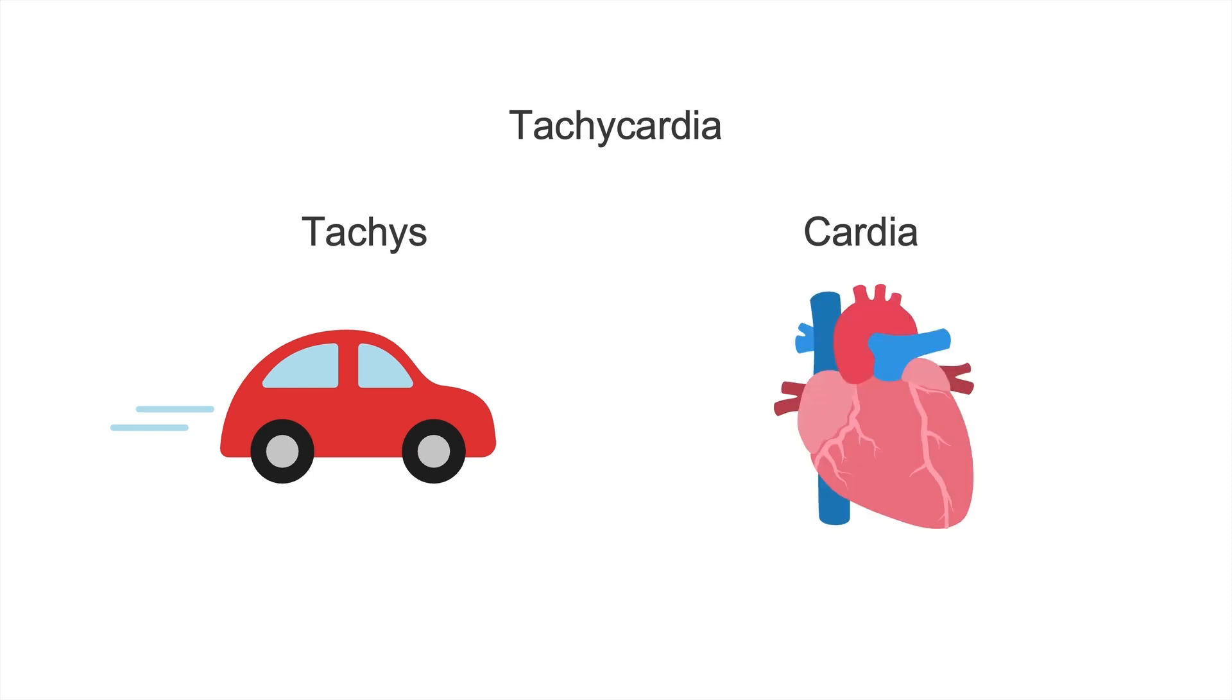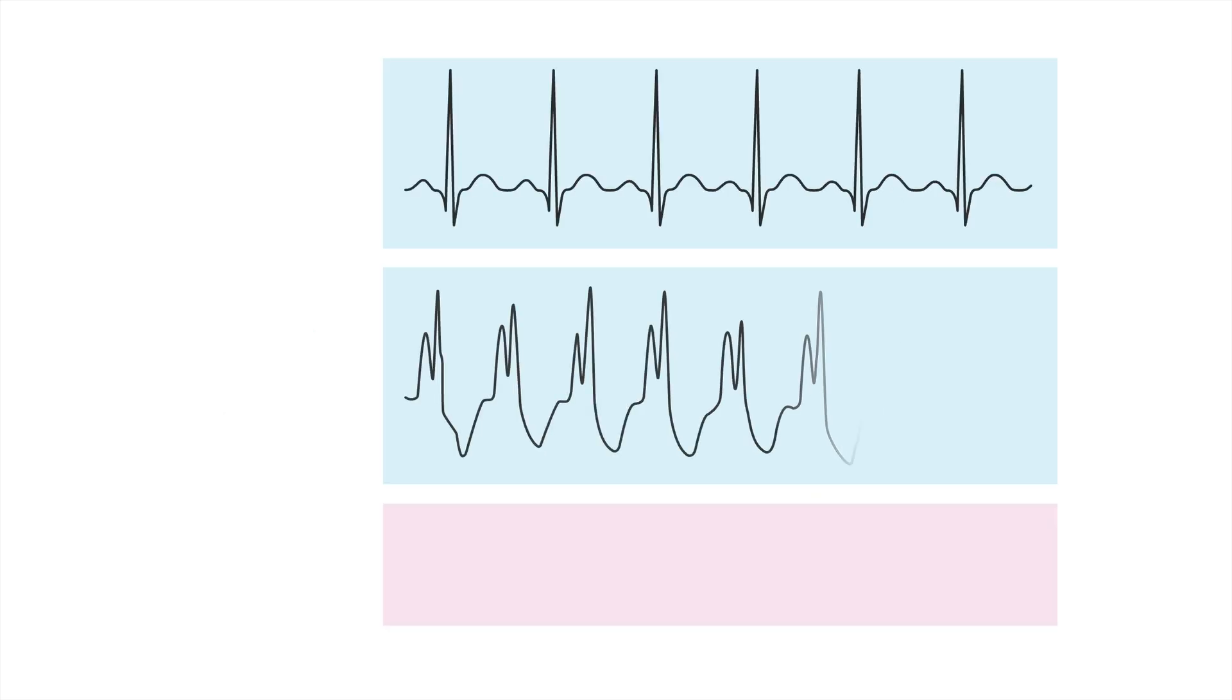Tachycardias can come in various forms. Let's look at some examples. This is fast. This is fast too. And what these two tachycardias have in common is that they are rapid and regular. Well, every tachycardia is rapid, but not all are regular.